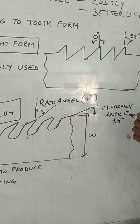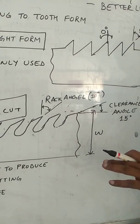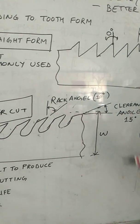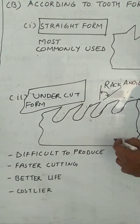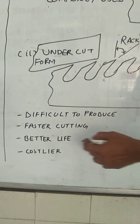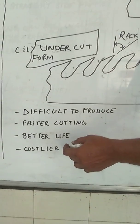This clearance angle gives you removal of the tooth from that cutting. So undercut form is slightly difficult to produce, faster cutting, better life, but it is costlier.